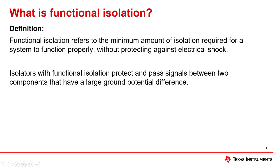So what is functional isolation? Functional isolation is the minimum isolation required for a system to function properly. Unlike basic or reinforced isolation, functional isolation does not intend to protect from electrical shock. Instead, it protects signals from high ground potential differences to prevent signal inaccuracies.